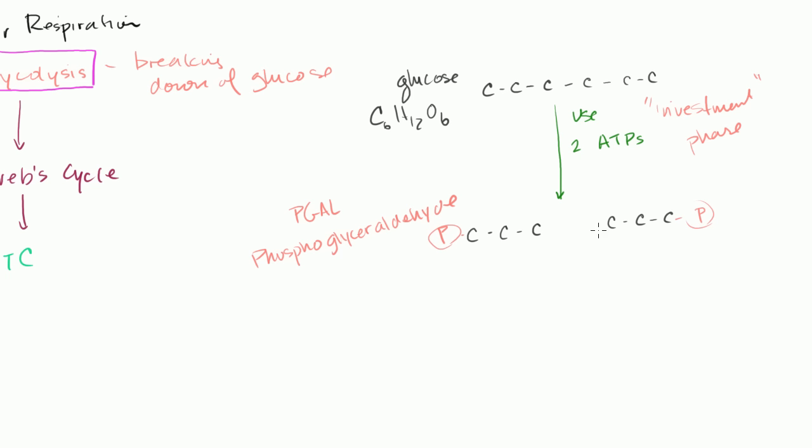And then each of these two PGAL molecules can then go into the payoff phase. So in the payoff phase, each of these PGALs turn into pyruvate, which is another three carbon, but it's reconfigured. But the process of it going to pyruvate, and let me write pyruvate in blue, because this is something that, at least it's good to know, the word. And I'll show you its structure in a second.